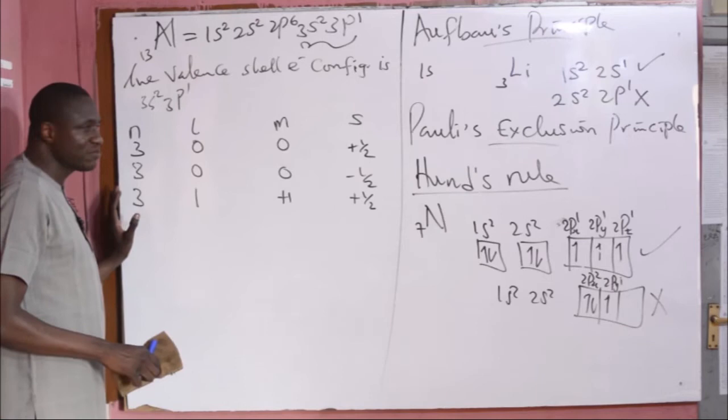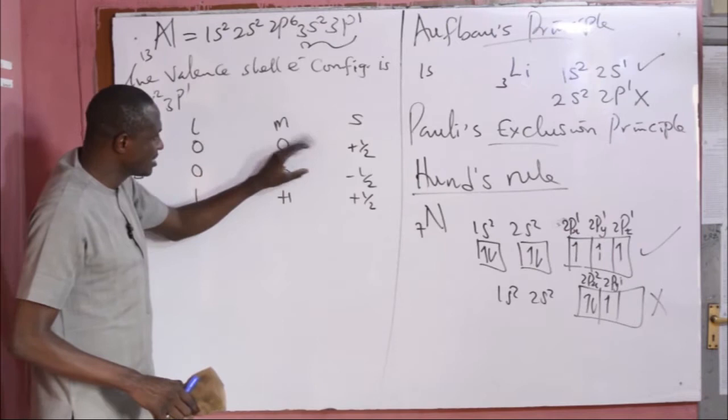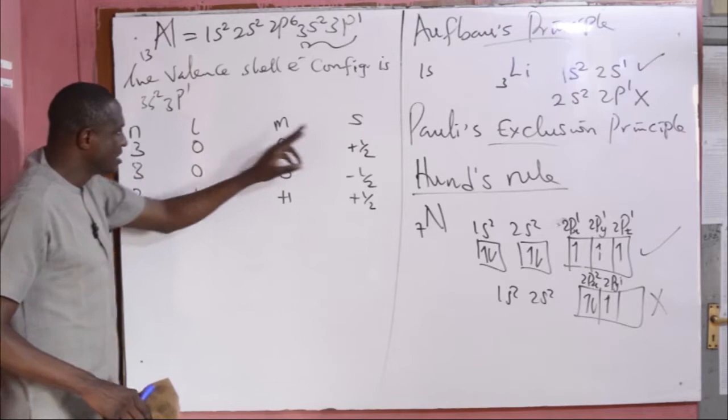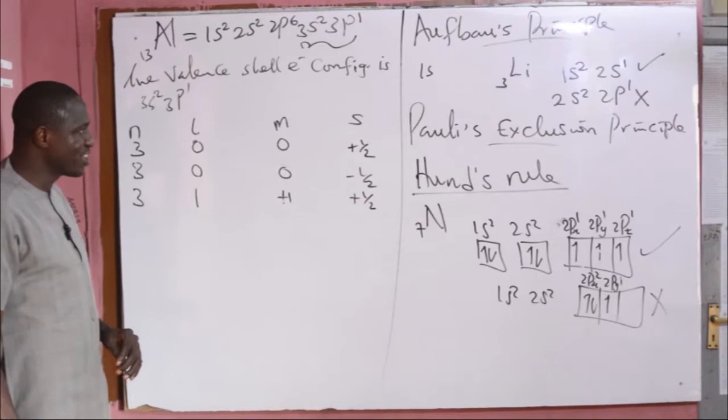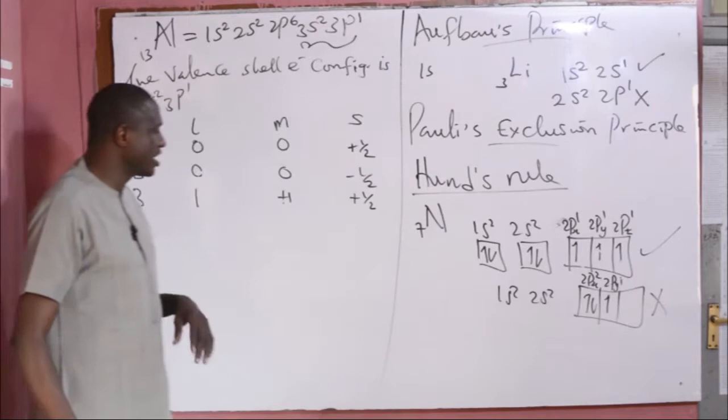Observe that the two 3s electrons have the same principal, the same azimuthal, and the same magnetic quantum number, but different spin. The first and the third electron (3s and 3p) have the same principal and the same spin, but different magnetic and different azimuthal quantum numbers. Even if two electrons share the same magnetic quantum number, they must not share the same azimuthal quantum number. This is exactly what the Pauli Exclusion Principle explains.